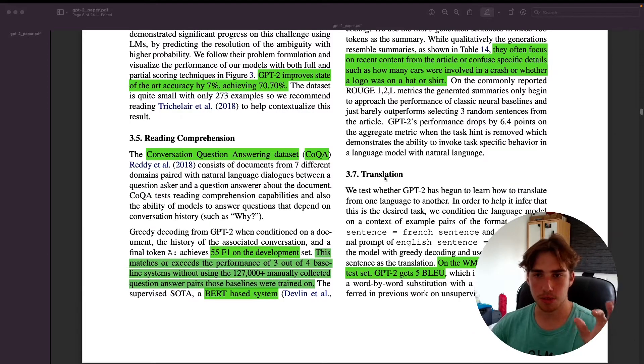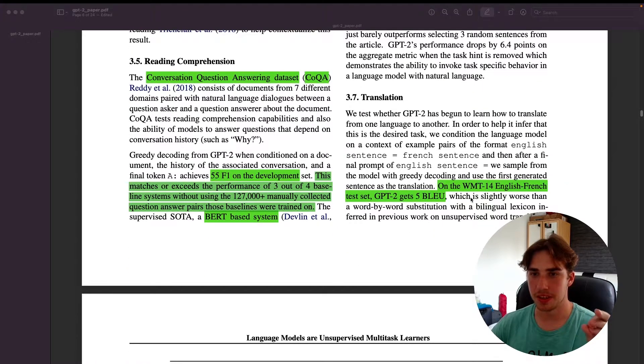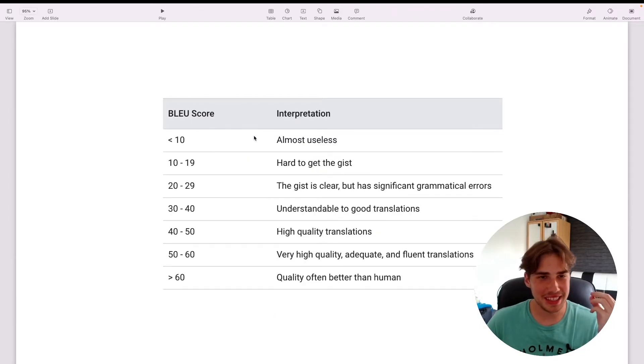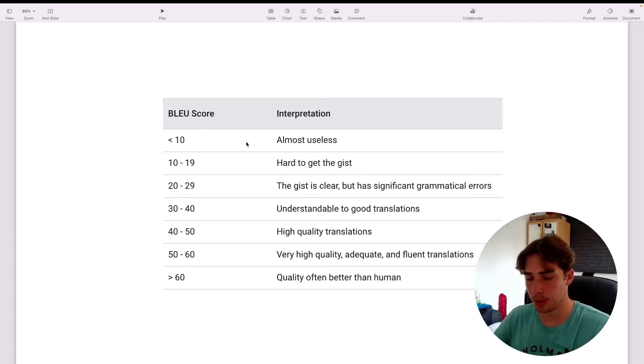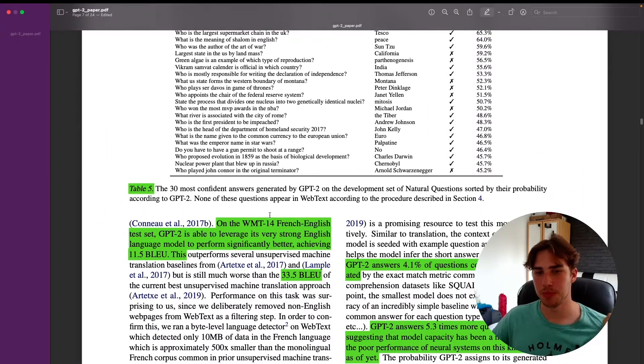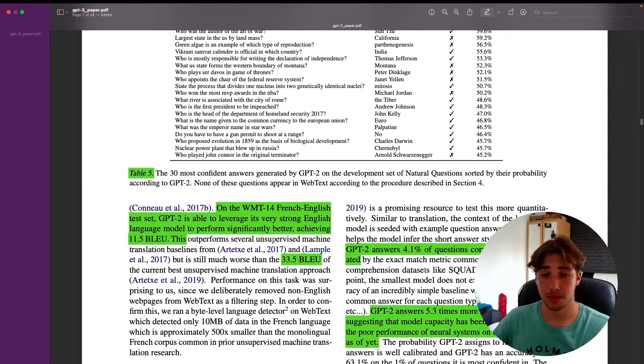Here they also show their potential in translation. They use the WMT-14 dataset—English-French translation dataset—and GPT-2 actually gets 5 BLEU points. Let me show you what the BLEU points are—that's the Google metric about BLEU. As you can see, 5 points means that it's almost useless. Still, they show that it can perform some of the translation, but it's not useful in any way. To give you a comparison, the actual state-of-the-art result is 33.5.